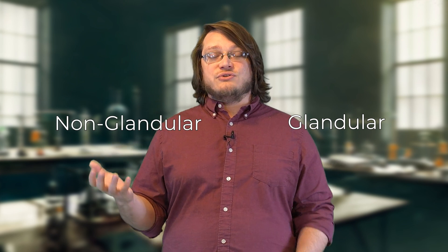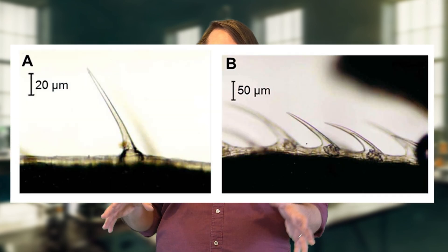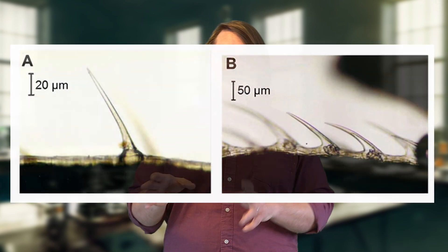And the non-glandular trichomes are these ones that I mentioned that really look like hairs. They're just kind of pointy. There's not a whole lot going on to them, although they do serve important functions for the plant. They help insulate the plant. They provide some basic defenses along the plant's tissues to try to help prevent pests from really getting in there and feeding on them.